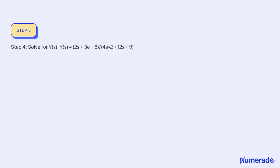Step 4: Solve for Y(s). Y(s) = (2s + 3 + 8) / (4s² + 12s + 9).